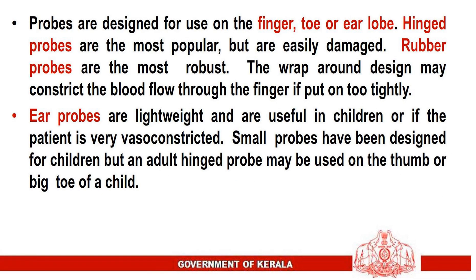Probes are designed for use on the finger, toe, or ear lobe. Hinged probes are the most popular but are easily damaged. Rubber probes are the most robust. The wrap-around design may constrict blood flow through the finger if put on too tightly. Ear probes are lightweight and useful in children or if the patient is very vasoconstricted. Small probes have been designed for children, but an adult hinged probe may be used on the thumb or big toe of a child.